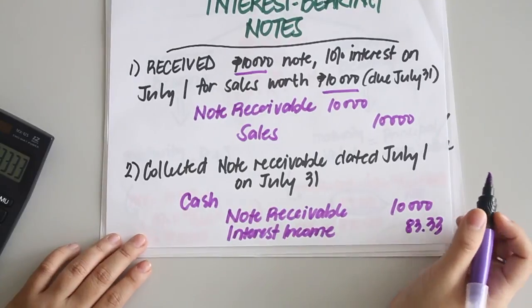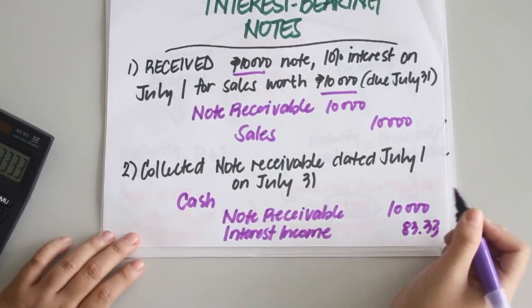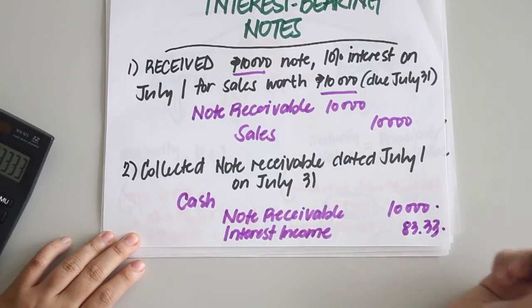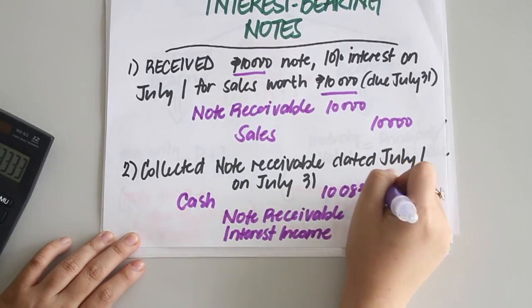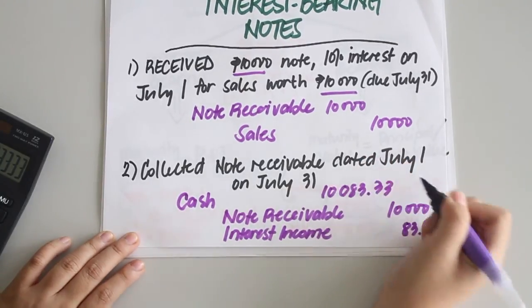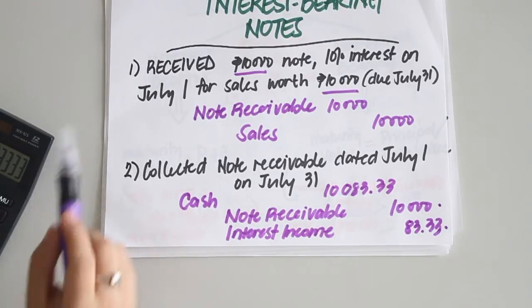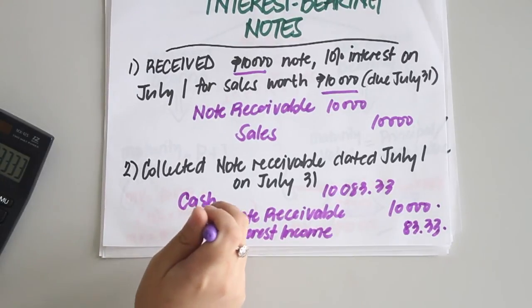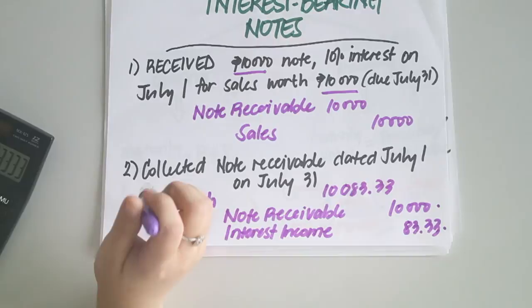The amount debited to cash would be the total of the principal and interest income: 10,083.33 pesos. The important rule to remember is that notes receivable would always be debited or credited at face value regardless of the transaction involved.